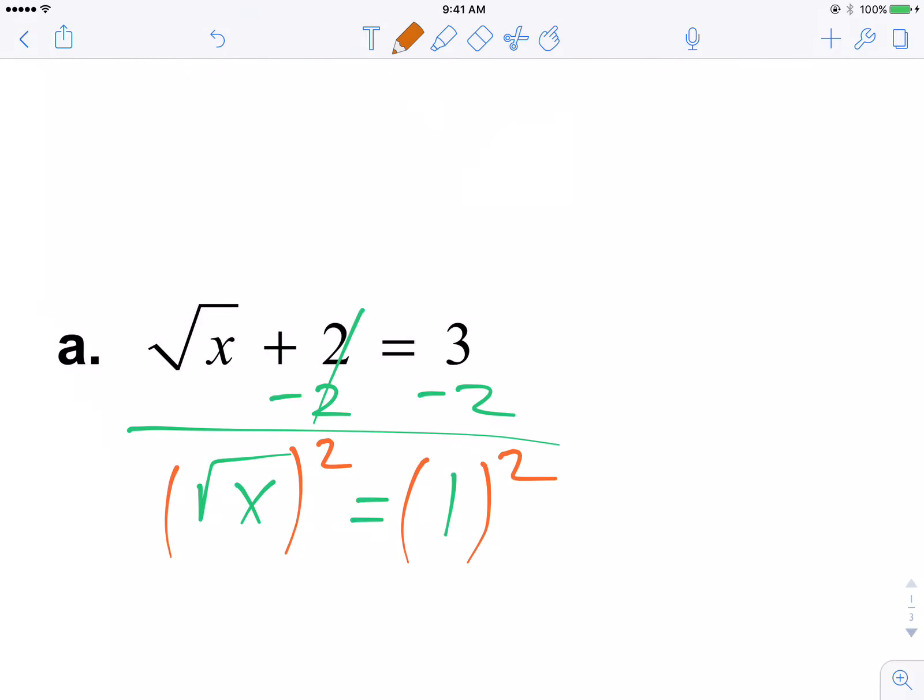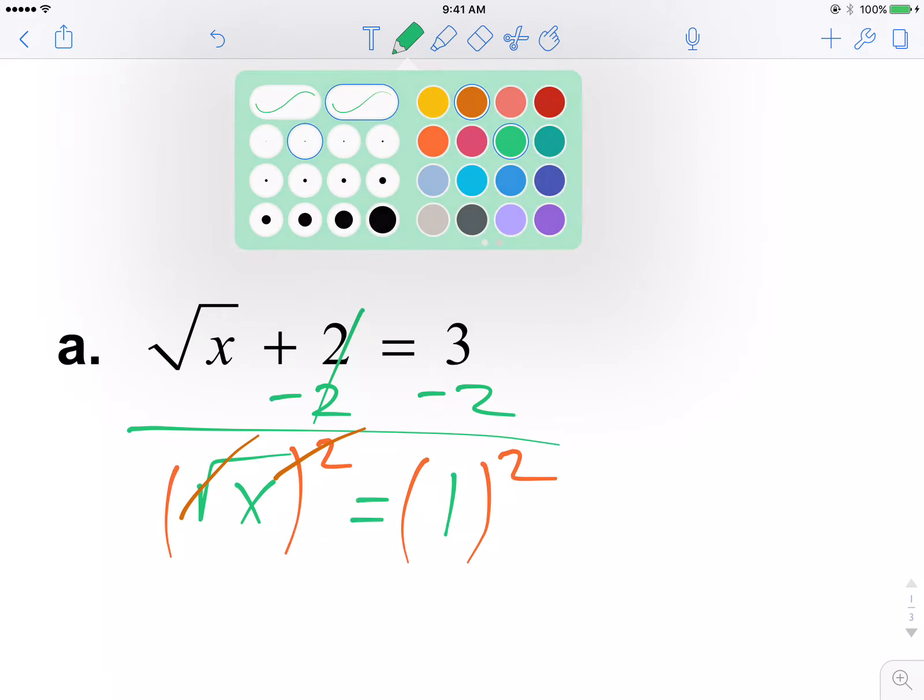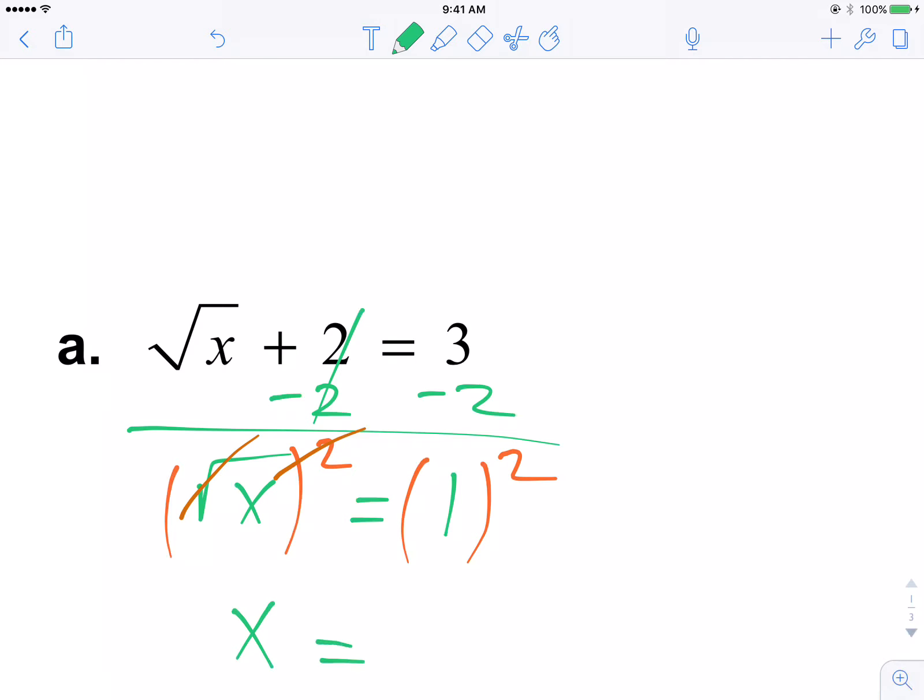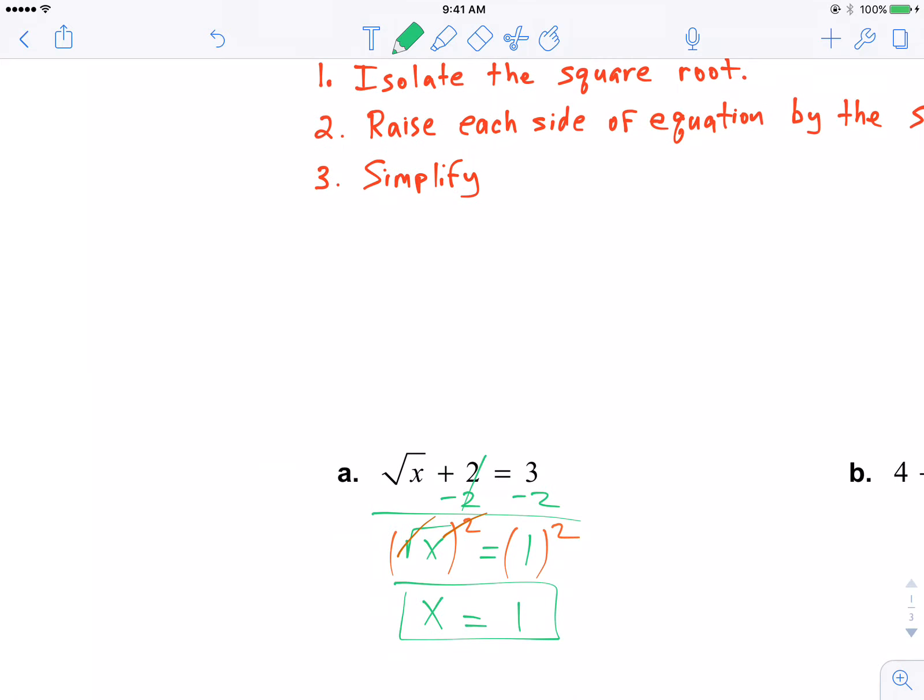And of course, you know and I know that the second power and the square root are inverses of each other. So you're going to get x equals 1 times 1 is 1. And there you have it. That's your answer.